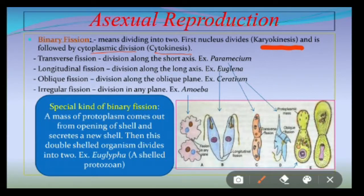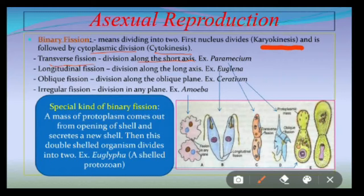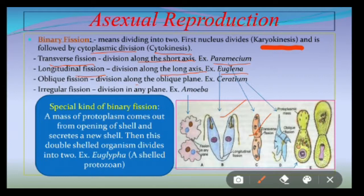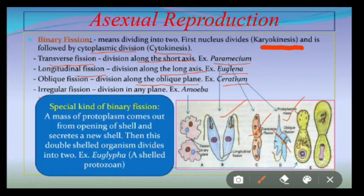Binary fission can be of different types in various protozoans. When binary fission takes place along the short axis, that division is called transverse fission — best example is Paramecium. Longitudinal fission occurs along the long axis; best example is Euglena, and most flagellates undergo longitudinal fission, whereas most ciliates undergo transverse fission. There is also oblique fission, where division takes place along the oblique plane — best example is Ceratium, where oblique division divides the parent cell into two daughter cells.